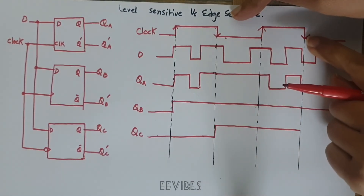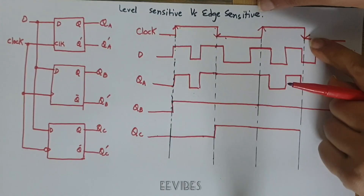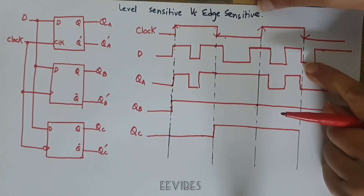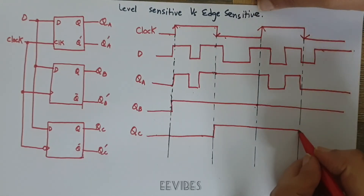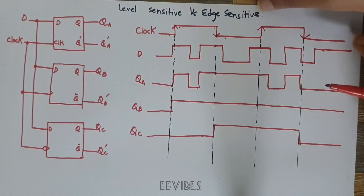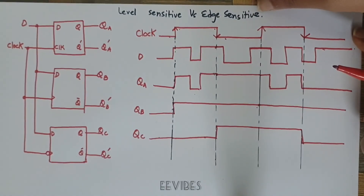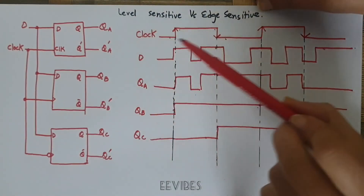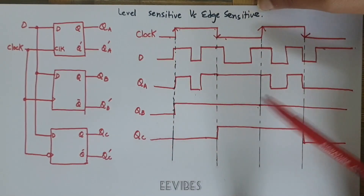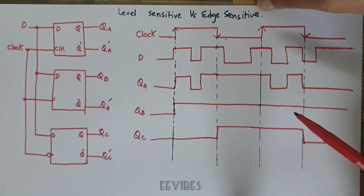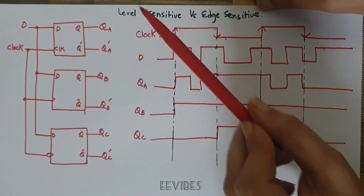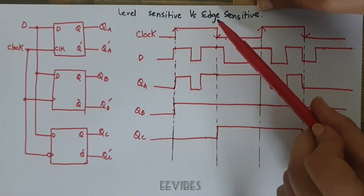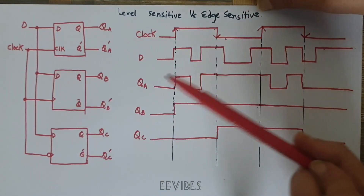When the next falling edge of the clock signal arrives, the value of D has changed to 0, so the output switches to 0 and continues until the next falling edge. In this way, we have drawn the output of three different elements and shown how the output waveforms change with respect to whether they are level-sensitive or edge-triggered elements.